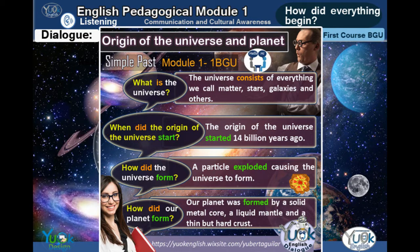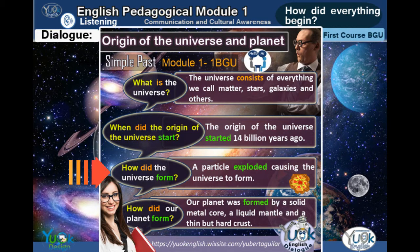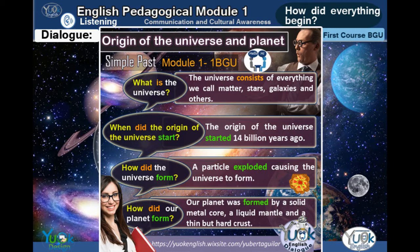Where did the origin of the universe start? The origin of the universe started 14 billion years ago. How did the universe form? A particle exploded, causing the universe to form. How did our planet form? Our planet was formed by a solid metal core, a liquid mantle, and a thin but hard crust.